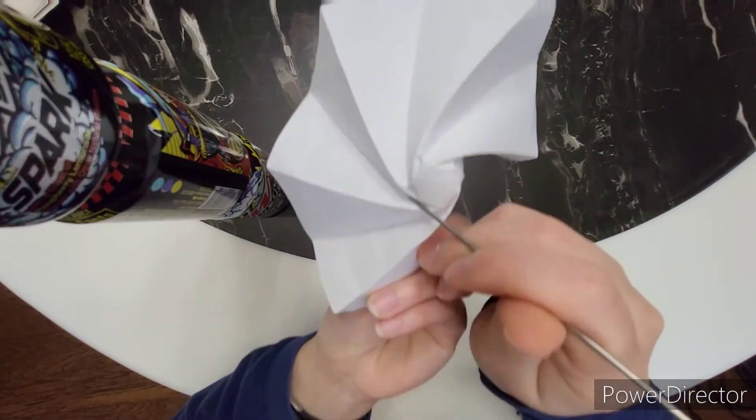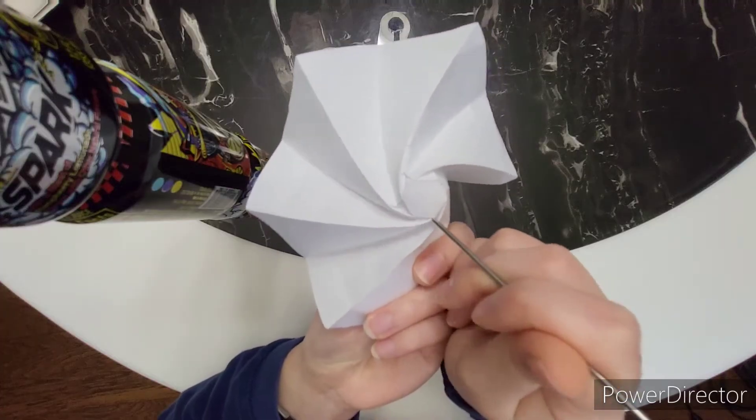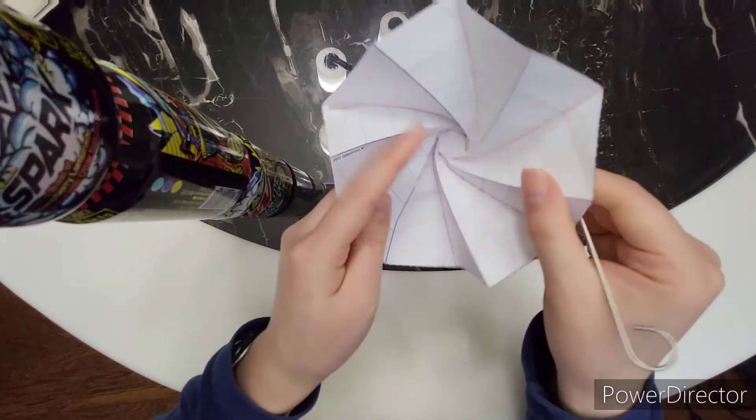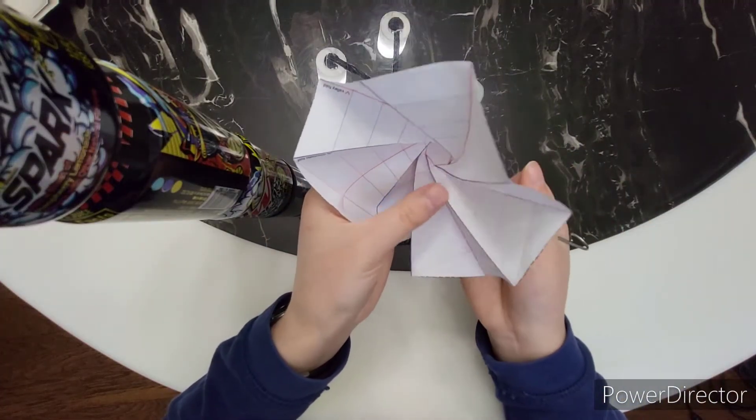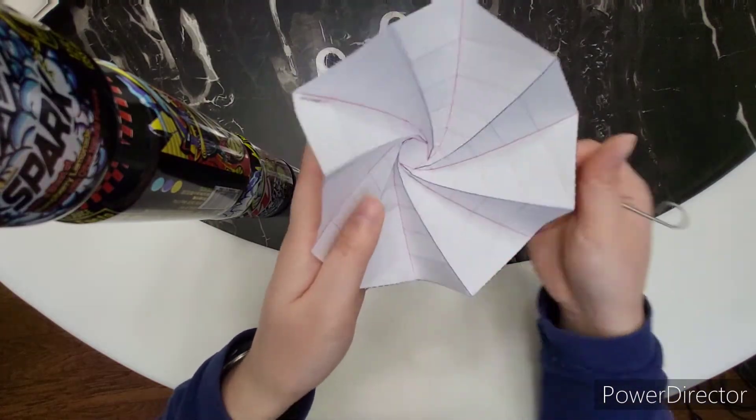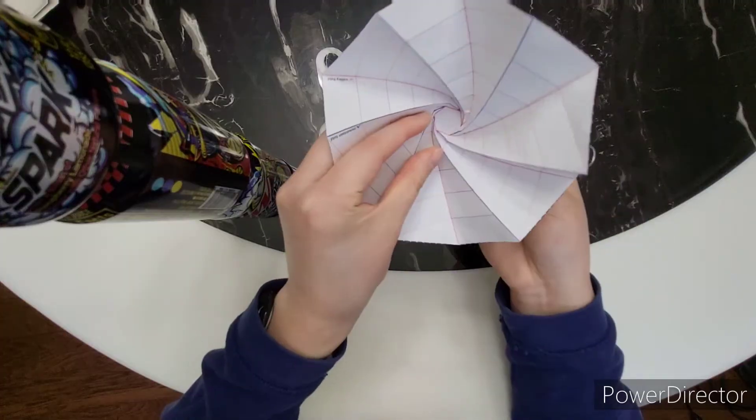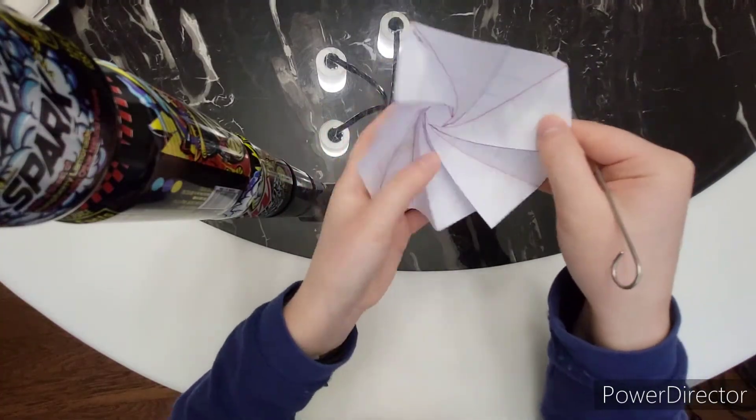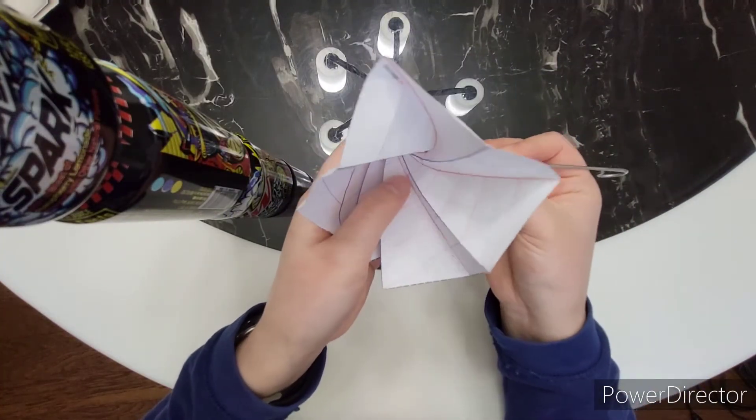NASA is currently experimenting with origami techniques to make their technology more compact in order to launch them into space more efficiently. Its compactable size also makes room for other materials that may need to be transported. This would help save lots of money since space travel is very expensive.